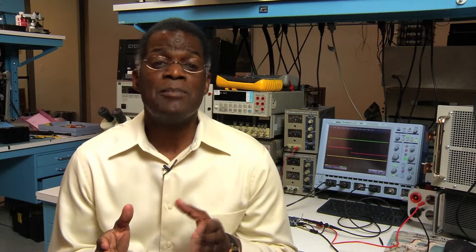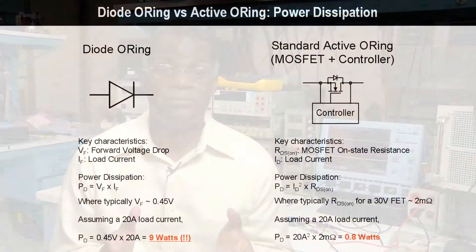The power dissipation in a diode is its forward voltage drop times its current. So a diode that has a voltage drop of 0.45 volts delivering 20 amps of current will dissipate 9 watts in heat.